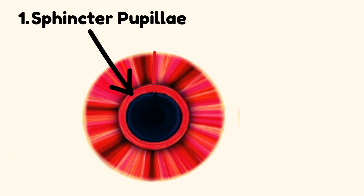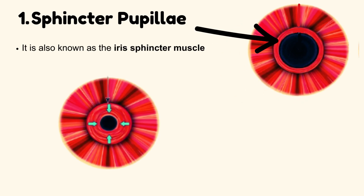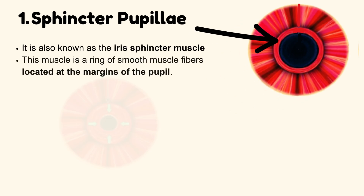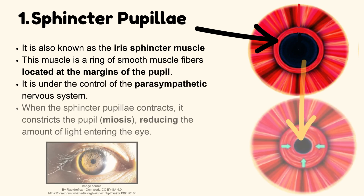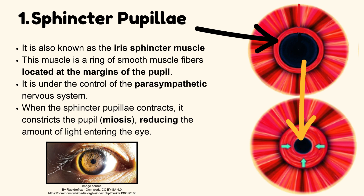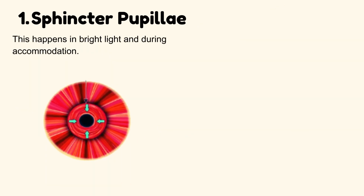Number 1: Sphincter pupillae, also known as the iris sphincter muscle. This muscle is a ring of smooth muscle fibers located at the margins of the pupil. It is under the control of the parasympathetic nervous system. When the sphincter pupillae contracts, it constricts the pupil, causing miosis, thus reducing the amount of light entering the eye. This happens in bright light and during accommodation.